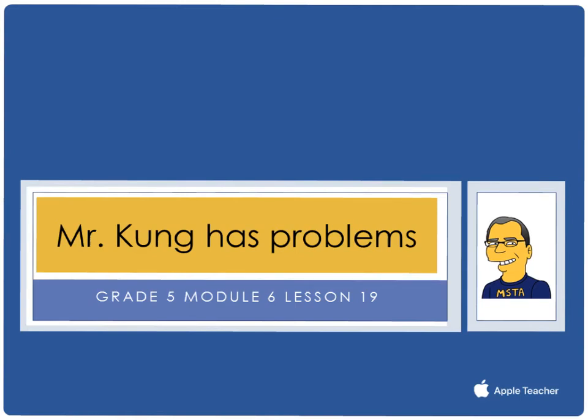Hello, and welcome to another episode of Mr. Kung Has Problems. Tonight in grade 5, in module 6, we are working on lesson number 19, and that means that we are plotting data on line graphs and analyzing trends. The homework for tonight includes two problems. I'm going to do most of problem number 2.